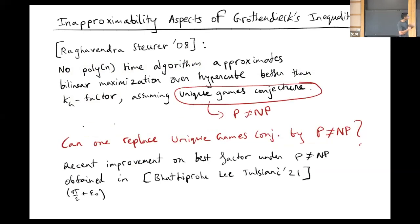Another open problem I'm really interested in is replacing this unique games conjecture by the weaker assumption of P not equal to NP. In some recent work, we sort of improved the state of the art on this, but we haven't taken it all the way. I'm still interested in this.